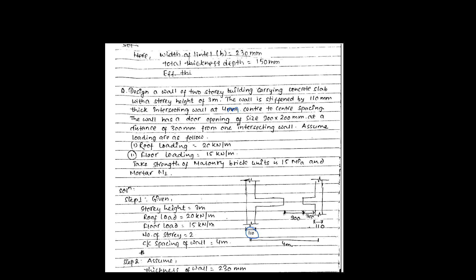Hello everyone. We are going to solve a numerical problem on masonry structure design. The question is: design a wall of a two-story building carrying a concrete slab with a story height of three meters. The wall is stiffened by 110 mm thick intersecting walls at four meter center-to-center spacing. The wall has a door opening of size 900 by 200 mm at a distance of 300 mm from one intersecting wall.